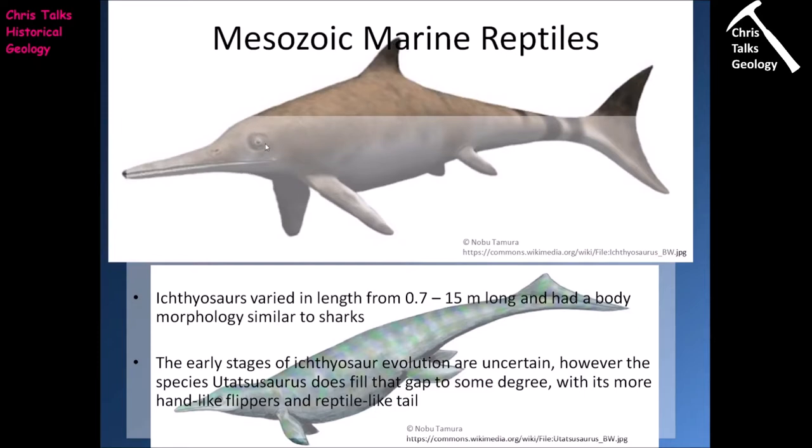One of the things we notice about ichthyosaurs is they do have extremely large eyes. This would suggest they were probably functioning in quite low light conditions, meaning they probably dived quite deep into the ocean into areas with very little light. They were probably hunting for cephalopods — squid and octopus, that kind of thing.